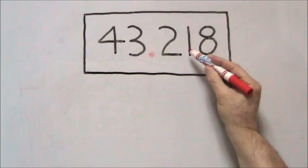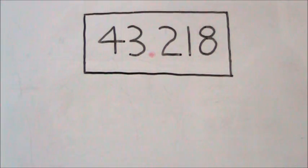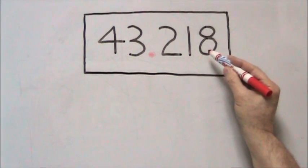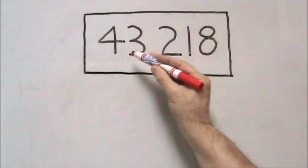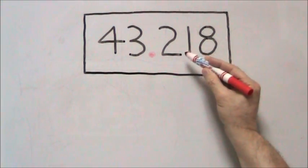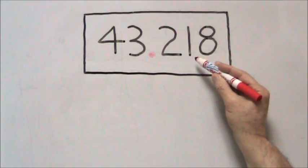The reason we can call them fractional numbers is because the 2, 1 and the 8 are fractions or parts of 43. So we can read 218 as 218 thousandths.